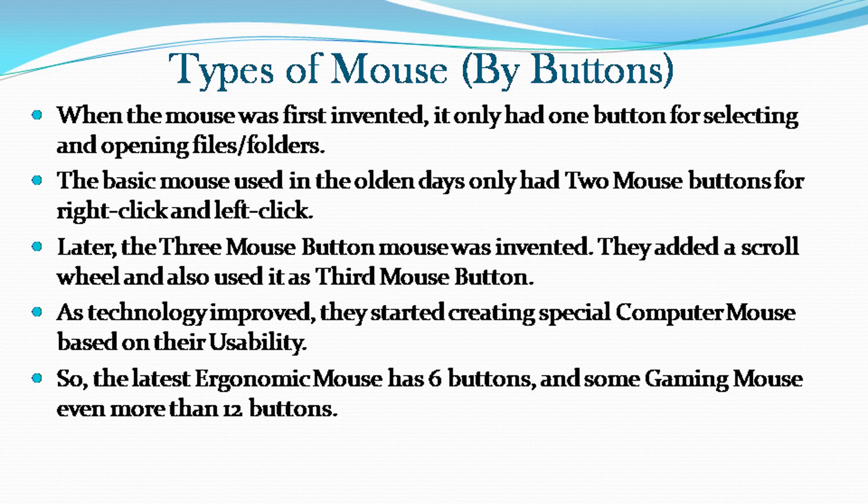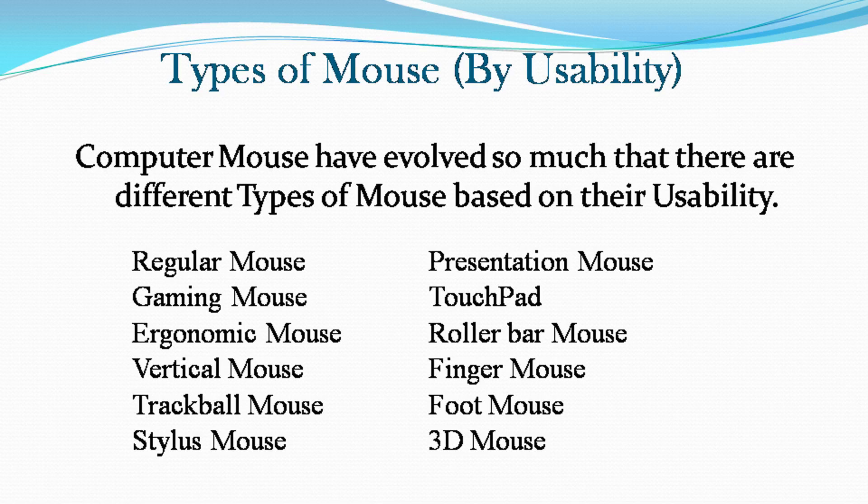When the mouse was first invented, it only had one button for selecting and opening files and folders. The basic mouse used in older days only had two buttons for right-click and left-click. Later, the three-button mouse was invented, adding a scroll wheel also used as a third mouse button. As technology improved, special computer mice were created based on usability. The latest ergonomic mouse has six buttons, and some gaming mouse have more than 12 buttons. Computer mice have evolved so much that there are now different types based on their usability.